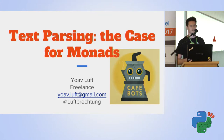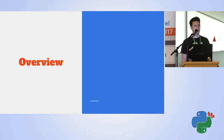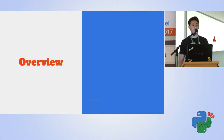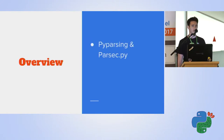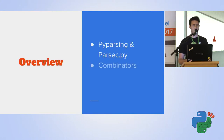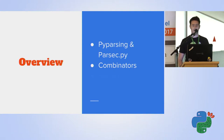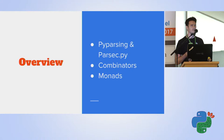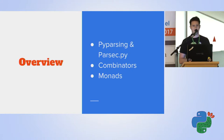So what we're going to talk about today: text parsing in Python using two libraries. We're going to talk about combinators, which is a fun little design pattern. And we're going to talk a little bit about monads, which is also a kind of design pattern. So let's start.